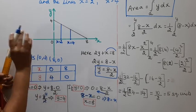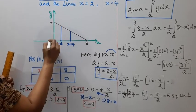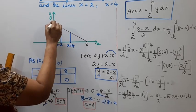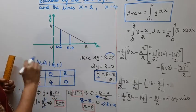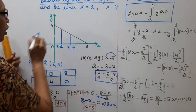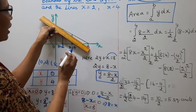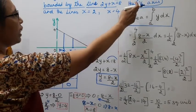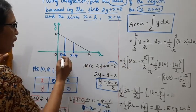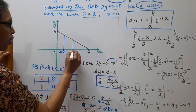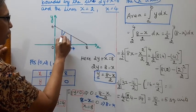Now, the points are (0, 4) and (8, 0). This is the x-axis and this is the y-axis. We will draw a rough graph of the line. Bounded by the line, x-axis and the lines x equal to 2 and x equal to 4.